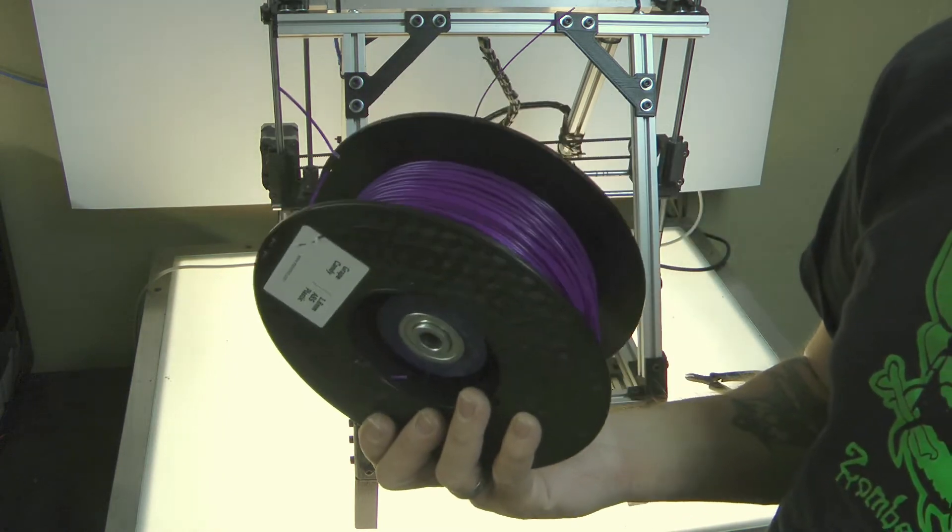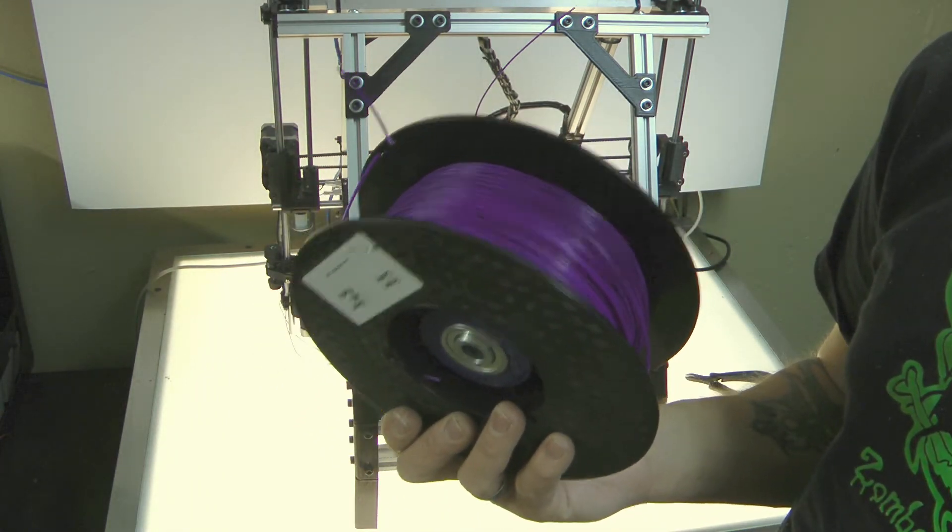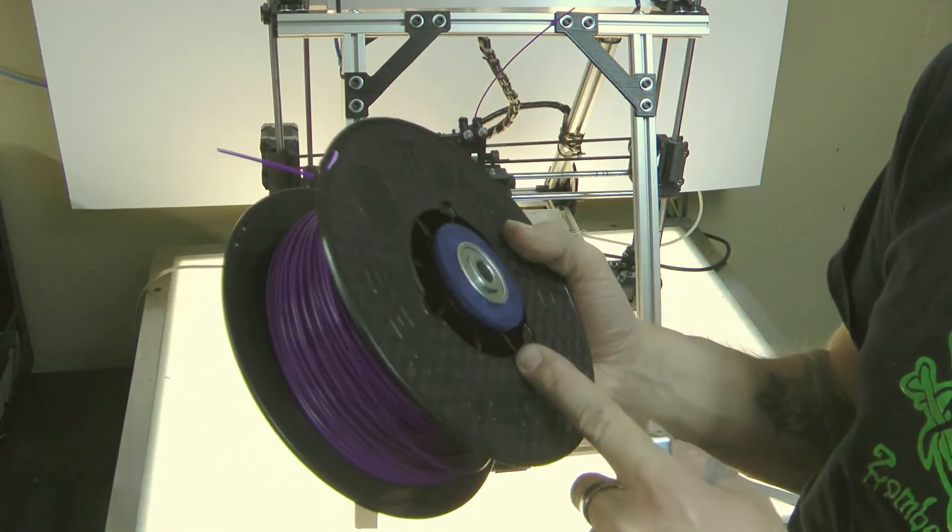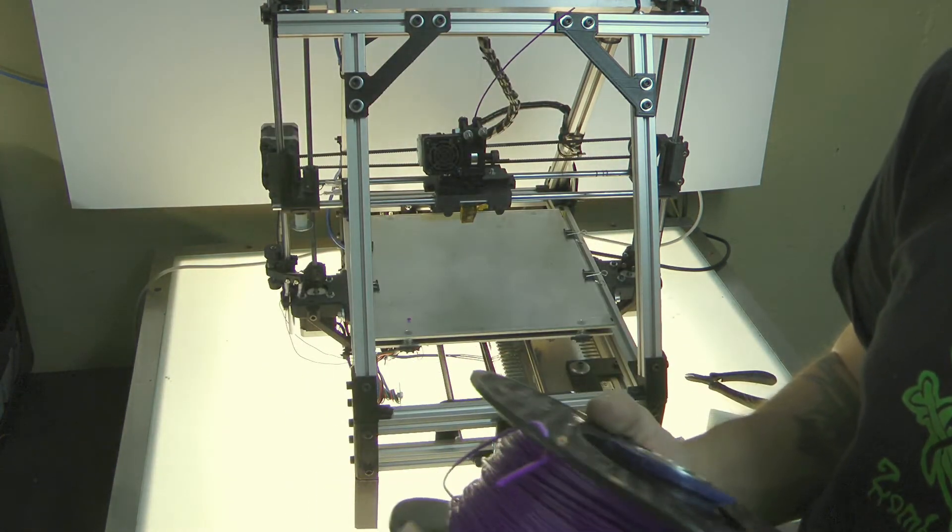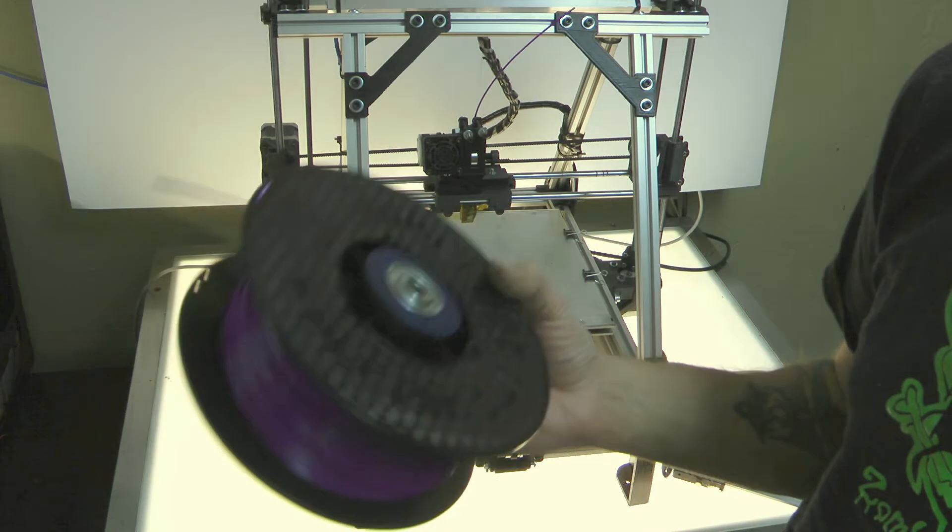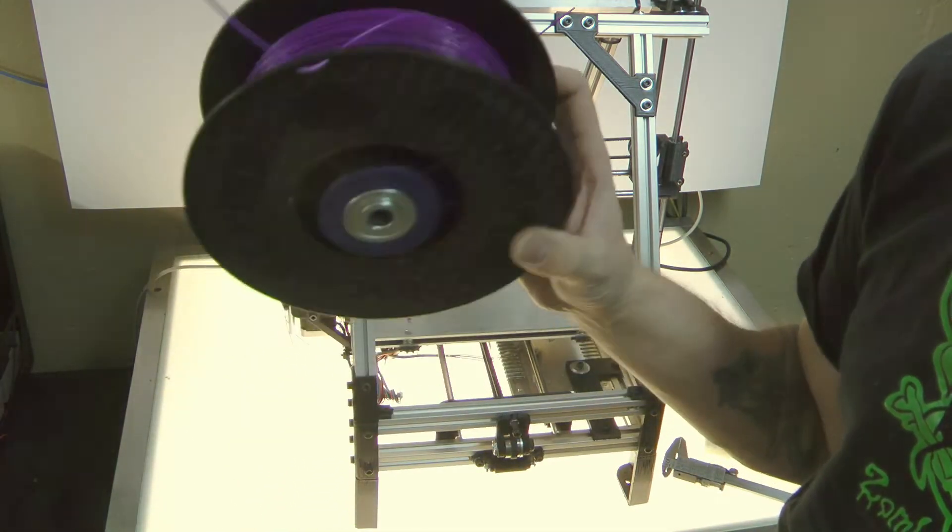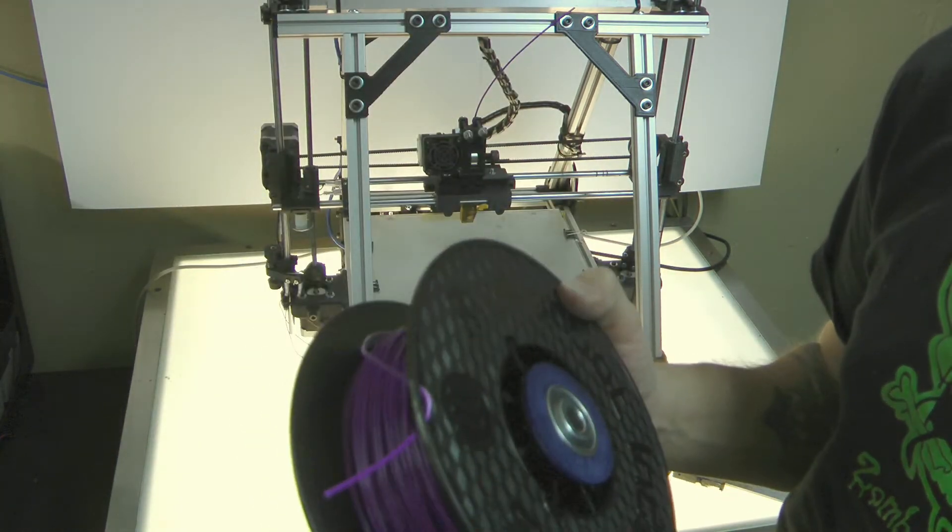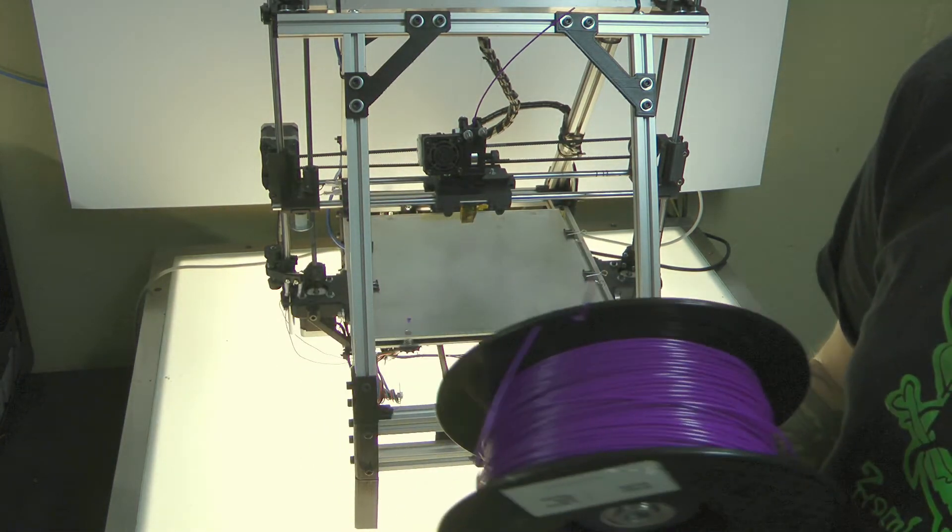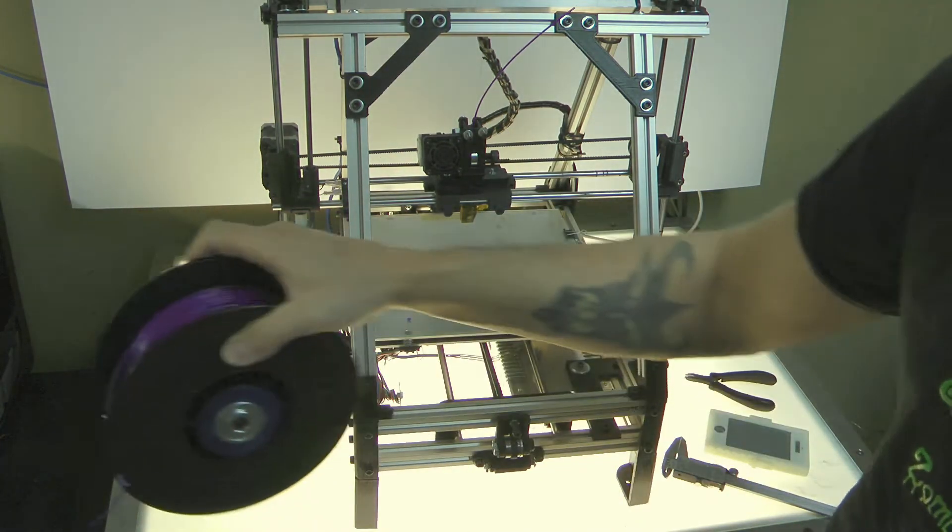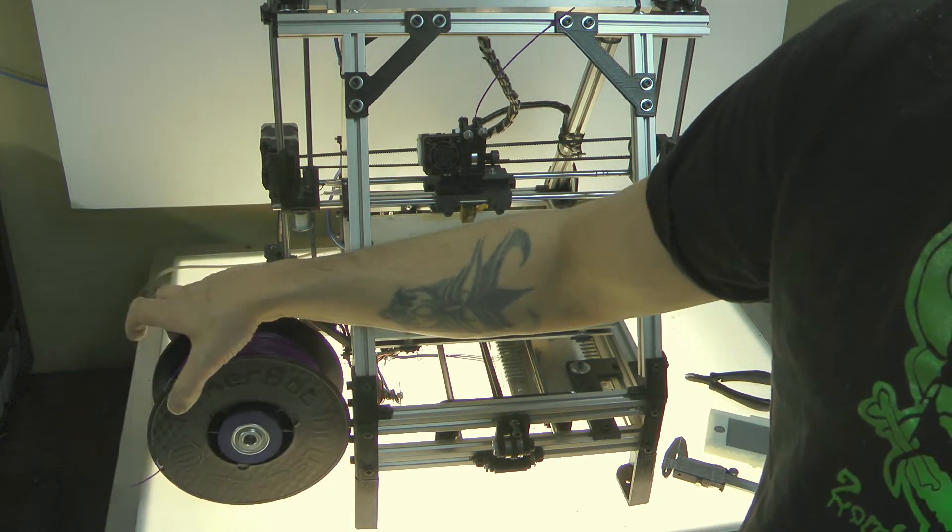But when you buy your first roll, just know that you maybe should get a MakerBot or something like that just to start out with. That way you know it's nothing about the filament that's the problem. And then later on, the $18 a roll just works fine. I like that stuff and I'll provide the link when we set up the software.